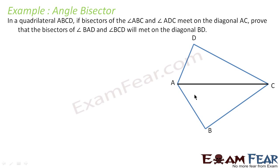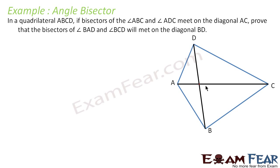We draw the bisector of angle ADC and angle ABC. The question says that these bisectors meet at a point on the diagonal AC. We have also drawn the diagonal BD. The bisector of angle ABC may be somewhere here, and the bisector of ADC may be somewhere here, and they meet the diagonal AC at a particular point P.